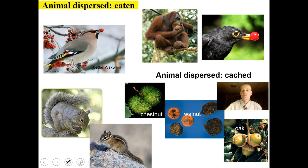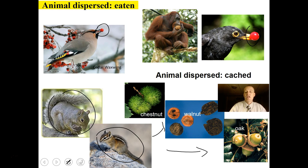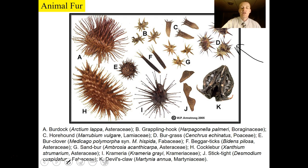Many seeds are eaten by animals — the animals get the fleshy fruit as a nutritious snack, the seeds pass through their intestines, and they poop the seeds out elsewhere. Squirrels and chipmunks will also bury seeds like acorns and nuts — this is called cached dispersal. They eat many seeds but forget about others. Some seeds attach to animal fur or clothing using little spurs — like cockleburs — and travel from one place to another.